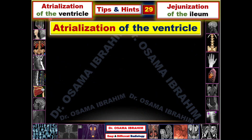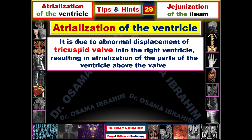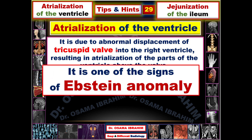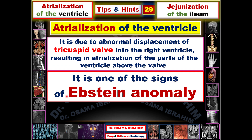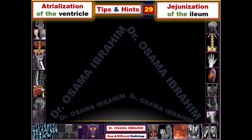The atrialization of the ventricle occurs due to the abnormal displacement of the tricuspid valve into the right ventricle, resulting in atrialization of the ventricular wall above that valve. This sign is one of the most famous for diagnosing Ebstein anomaly, which is a cardiac anomaly that can be diagnosed by chest X-ray, echocardiography, CT, and MRI.